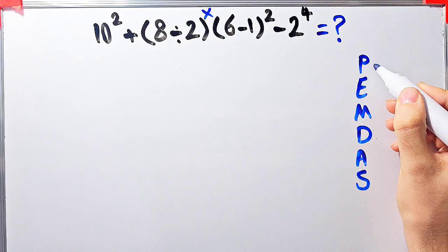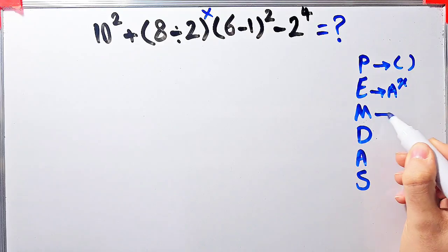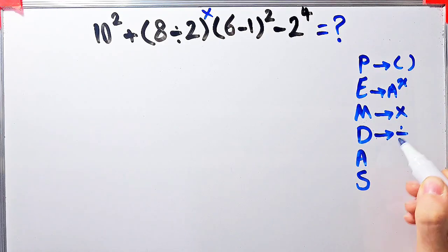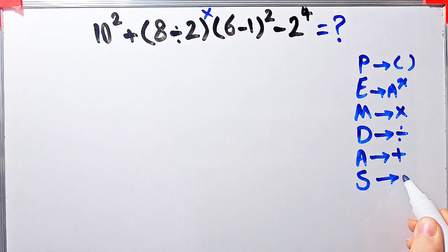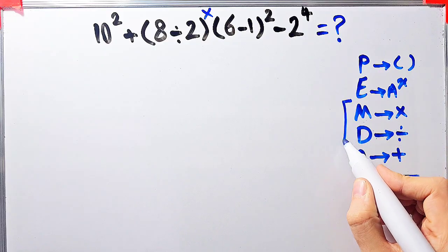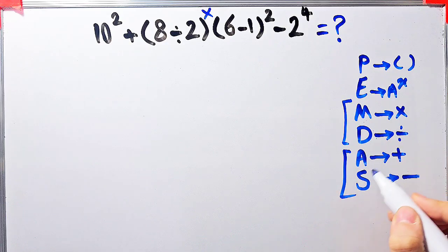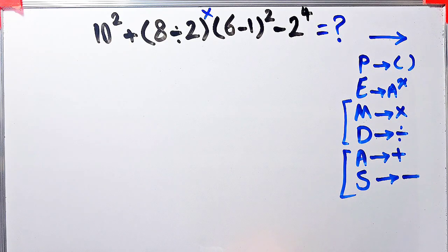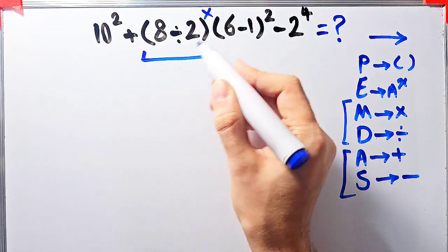PEMDAS shows the priority of the mathematical operations. P stands for parenthesis, E stands for exponent, M stands for multiplication, D stands for division, A stands for addition, and S stands for subtraction. Multiplication and division have the same level of priority, and addition and subtraction have the same level of priority. When we have both in an expression, we start from the left. First, we simplify the parentheses: 8 divided by 2 equals 4.